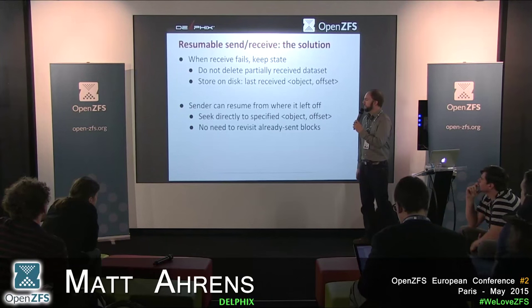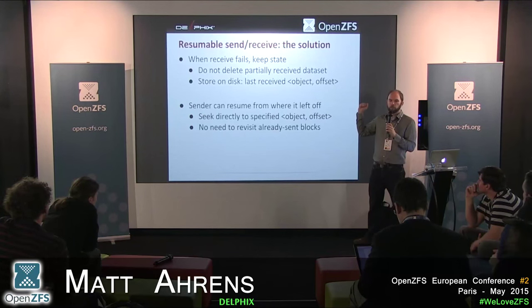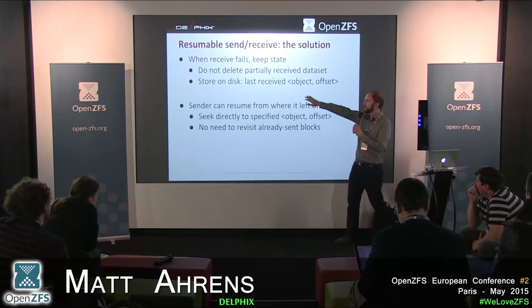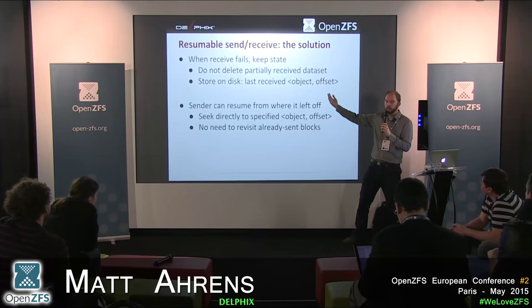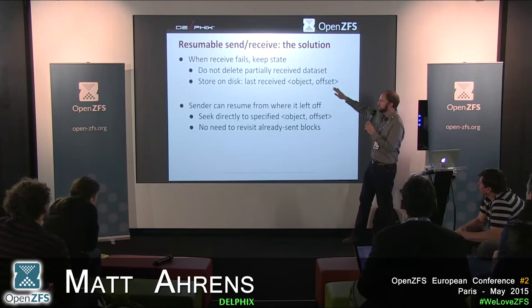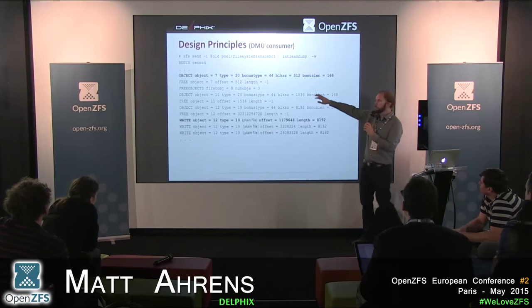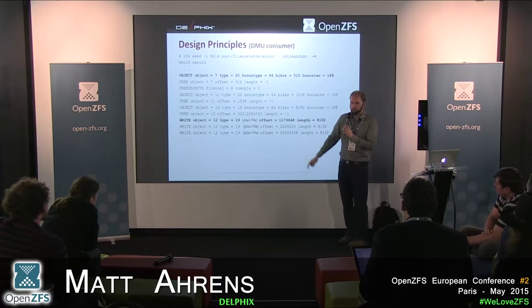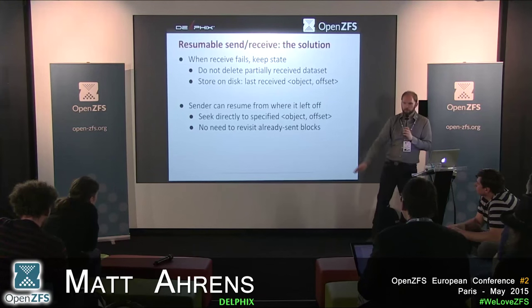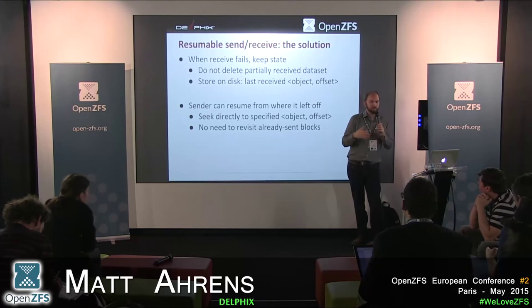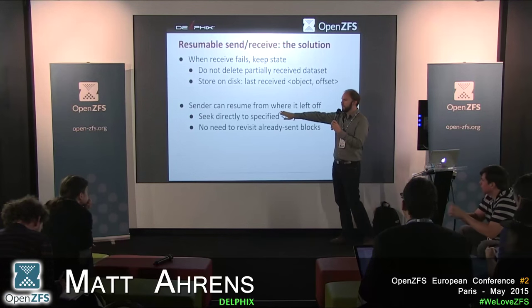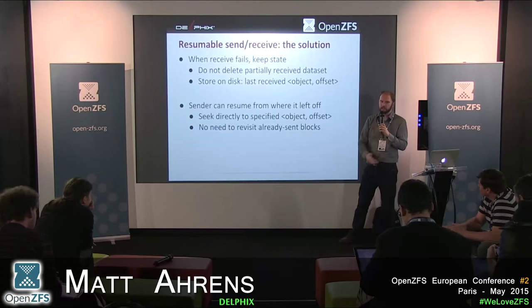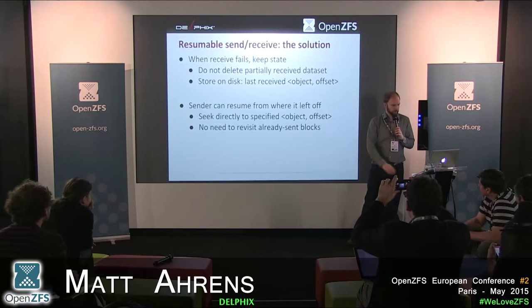The solution is conceptually straightforward: when a receive fails, keep the state already received and remember how far we got by recording the object and offset. This works because records in the send stream are sorted by object and then by offset — always going forward. So the last received object and offset tells us exactly everything received and everything yet to be received. The sender resumes by seeking directly to that object and offset — resuming in constant time.